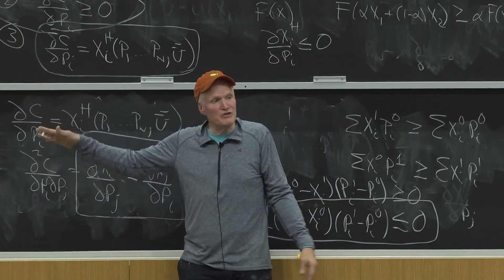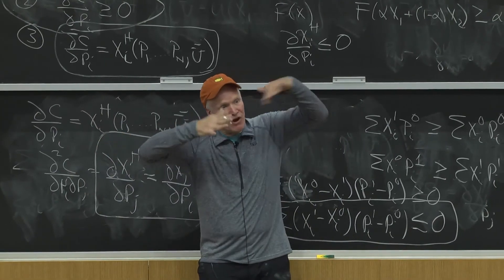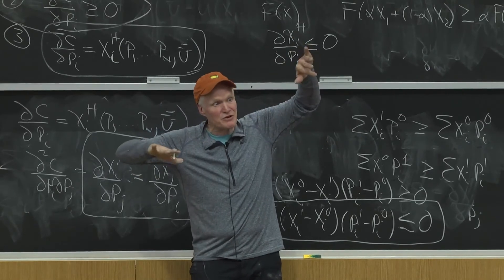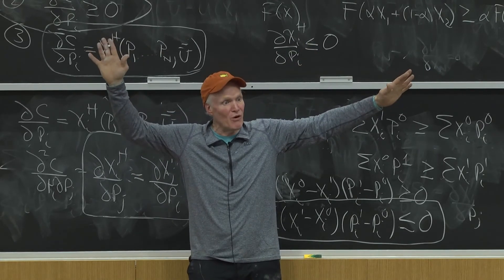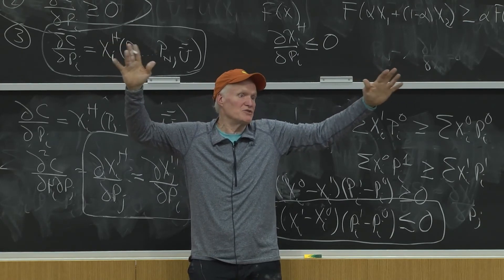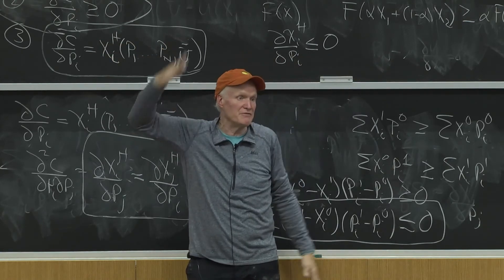And because we're holding utility constant, the cost function for a given utility level just is telling me about that indifference curve, right? Because none of the other indifference curves play any role in that cost function because the cost function is only looking indifference curve by indifference curve,